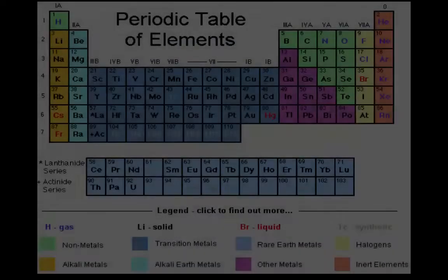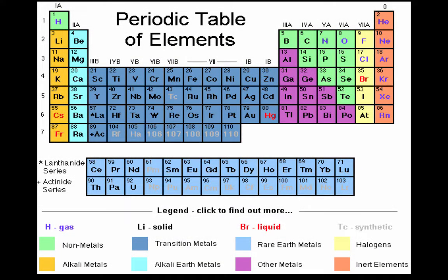An element is matter that is composed of a single type of atom. On Earth, we have discovered over 100 elements and we've organized them into something called the periodic table of elements. Of these more than 100 elements on Earth, we see that Earth itself is primarily composed of just a handful of elements.